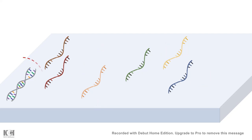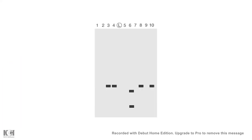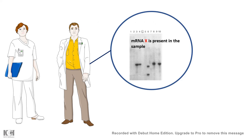After that, we develop the membrane and get an autoradiograph. This is how the autoradiograph would look like, and that is how the scientist would understand that the mRNA X is present in this sample. This is the usage of Northern blot.